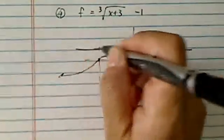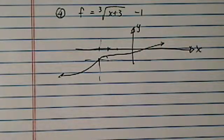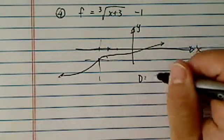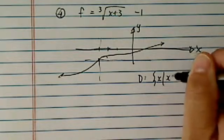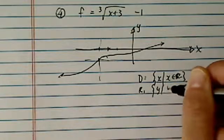As you can see from this graph, there's no restriction on any x or y. So our domain is all real numbers. The range has no restriction either.